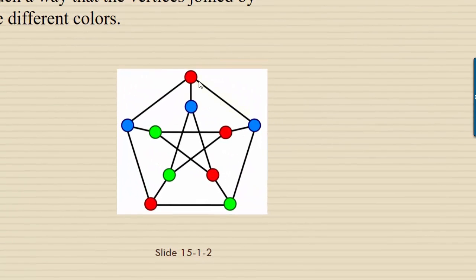For example, in this graph, we see the endpoints of one edge are two vertices, one red and one blue. If you analyze any of the edges in this graph, you'll see that the two vertices are different colors.